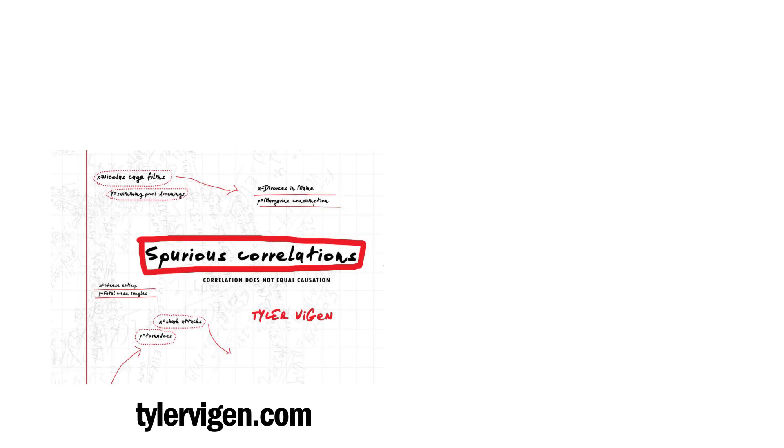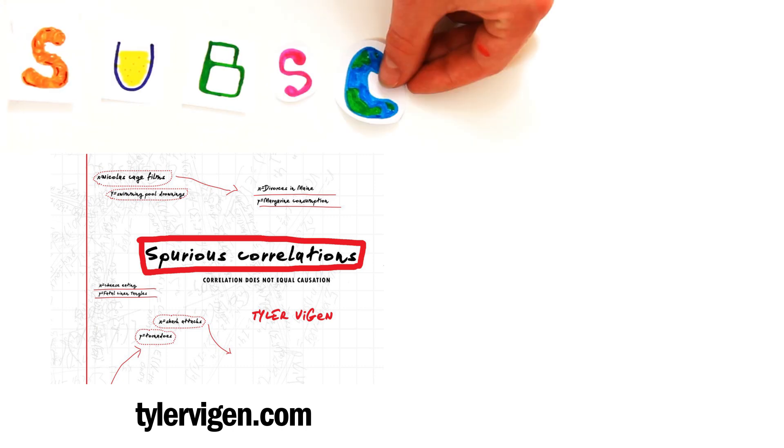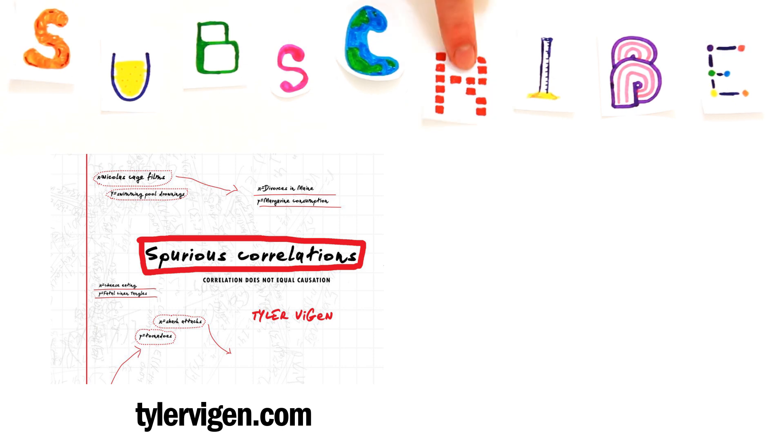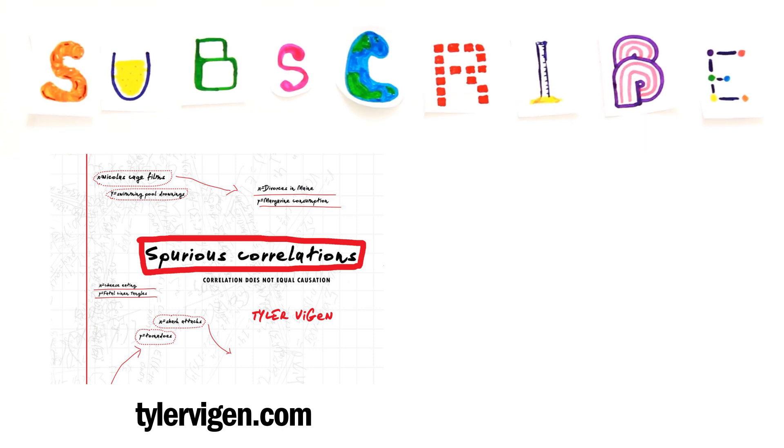Big thanks to Tyler Vigen for providing his charts on these interesting correlations. You can check out his website or his book Spurious Correlations for more peculiar examples. And subscribe for more weekly science videos every Thursday.